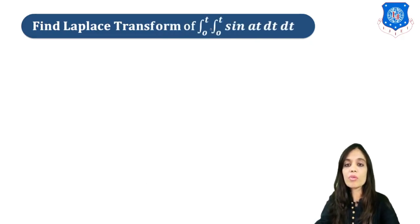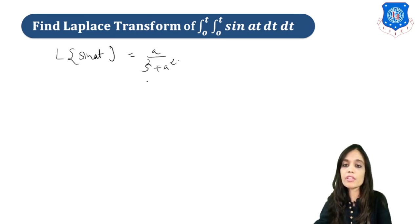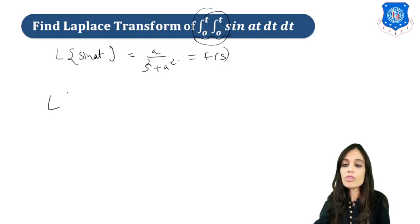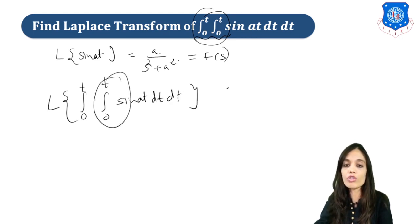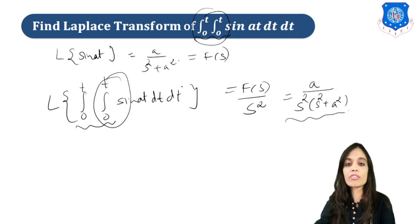Let us go to the next example. We have to find the Laplace transform of a double integral from 0 to t. The Laplace of sin(at) is a upon s squared plus a squared, so this is our F(s). Because we have double integration, we write it as the double integral from 0 to t of sin(at) dt dt. For single integration we divide by s; here we have integration two times, so we divide by s squared. The final answer is a upon s squared times (s squared plus a squared).